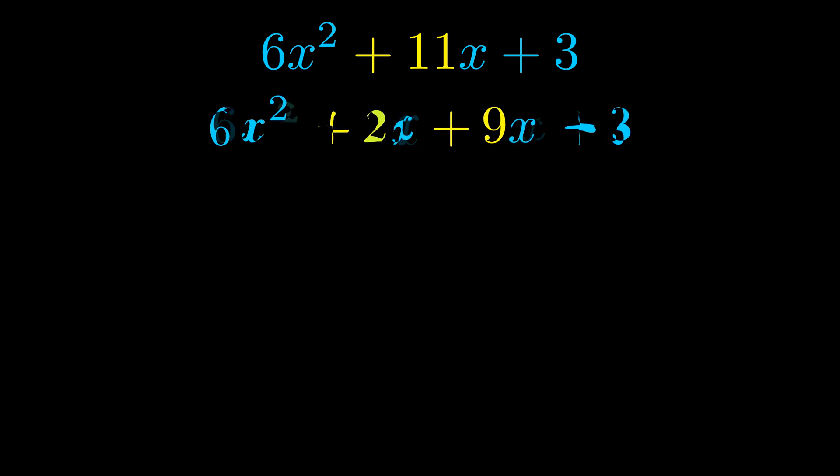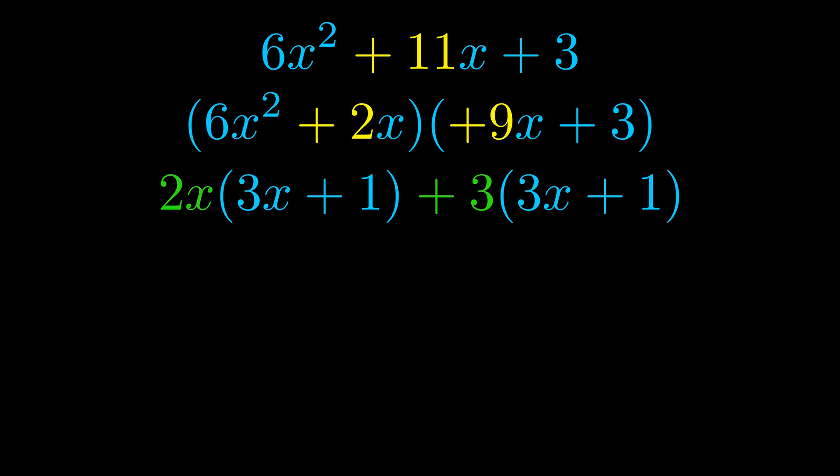Once we've done this, we go ahead and put parentheses around the first term and the last term, and we do that so that we can take the greatest common factor out of both terms. We can see the greatest common factor is now outside in green. Notice also how what remains inside of the parentheses is the same in both cases. The blue values are the same.